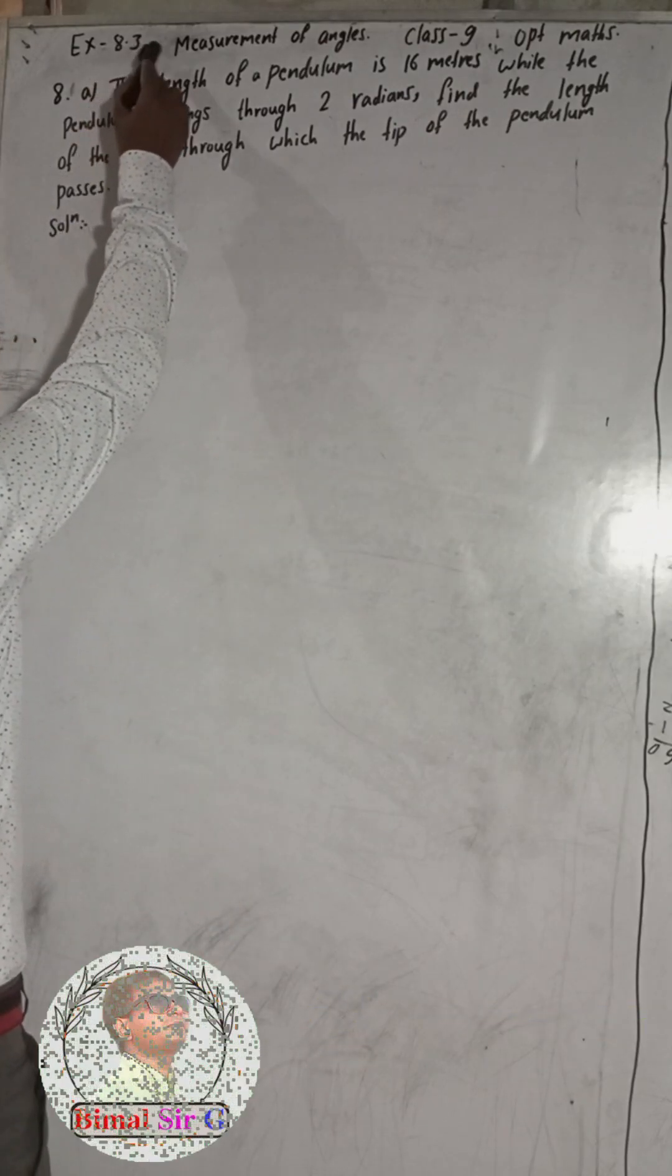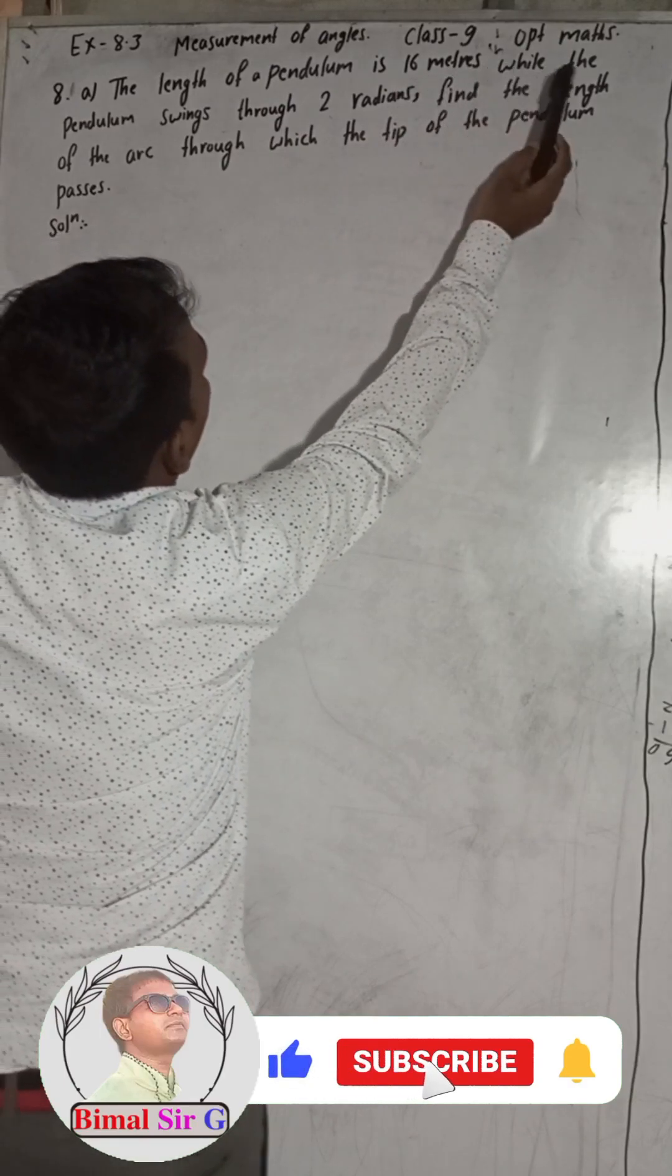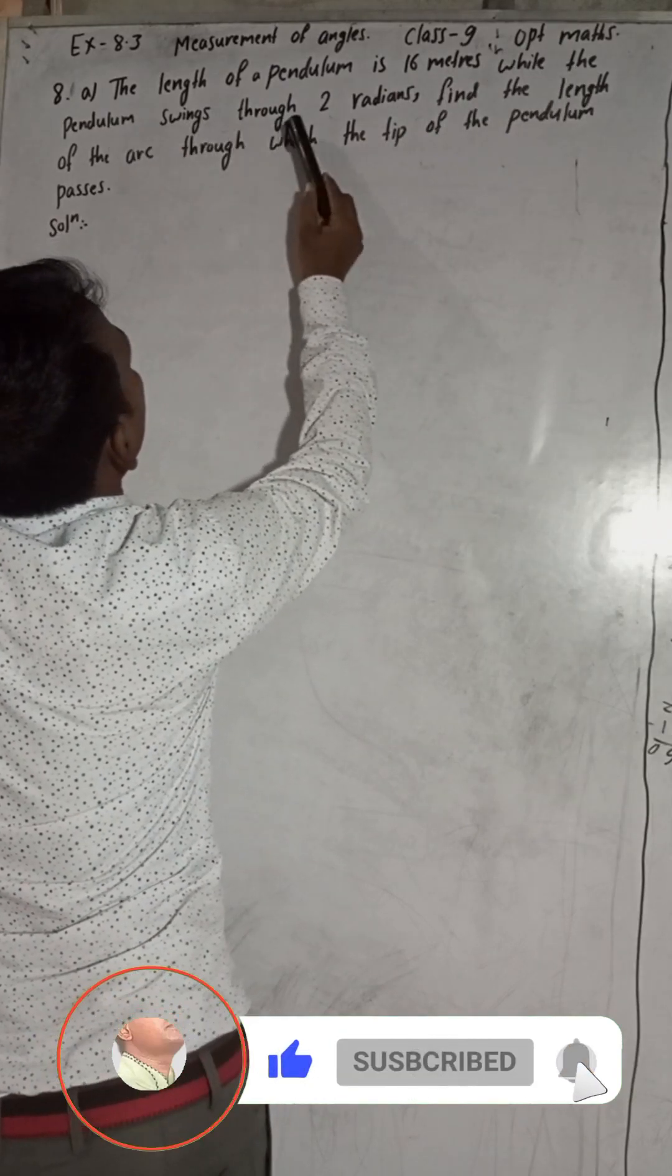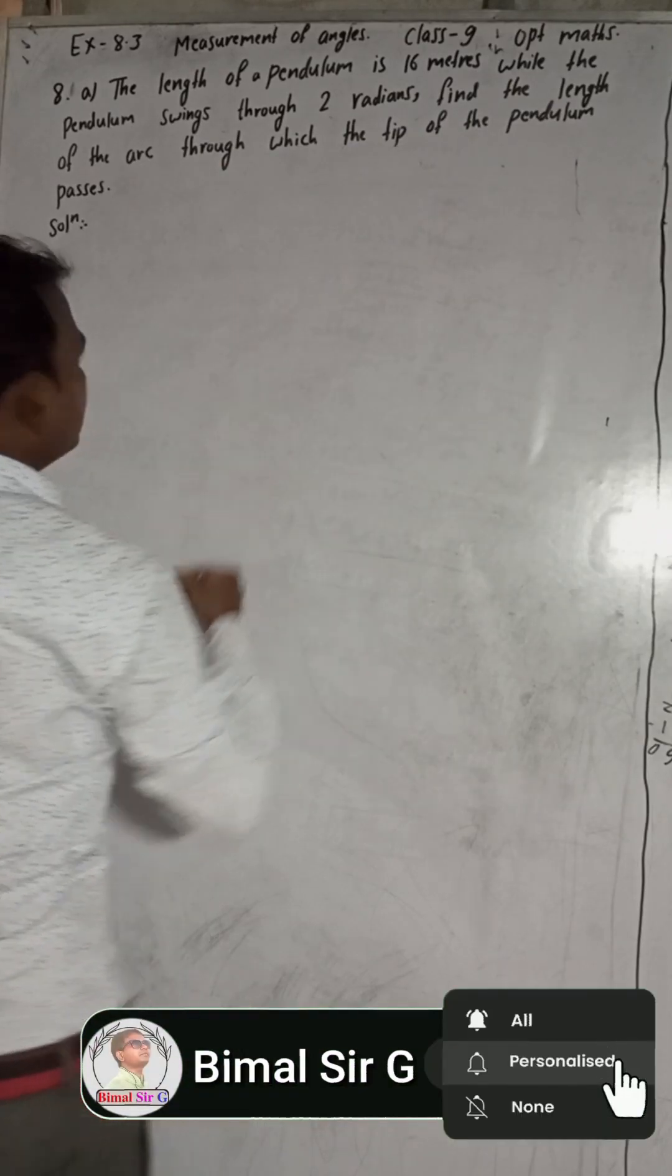Now this question is Exercise 8.3. At 9 AM the length of a pendulum is 16 meters. While the pendulum swings through two radians, find the length of the arc through which the tip of the pendulum passes.